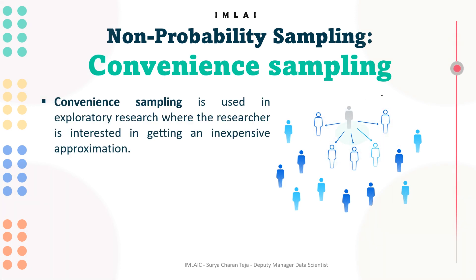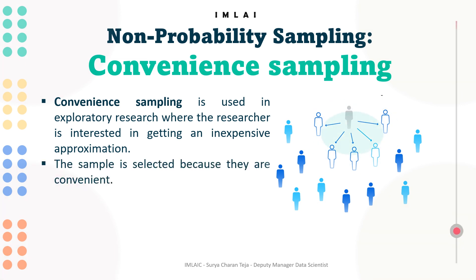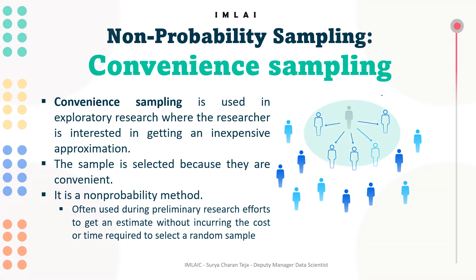Convenience sampling is used in exploratory research. Under quantitative or qualitative research you have sub-research types, one of them being exploratory research. It is used where the researcher is interested in getting an inexpensive approximation, and the sample is selected because they are convenient. It is often used during preliminary research efforts to get an estimate without incurring the cost or time required to select a random sample.